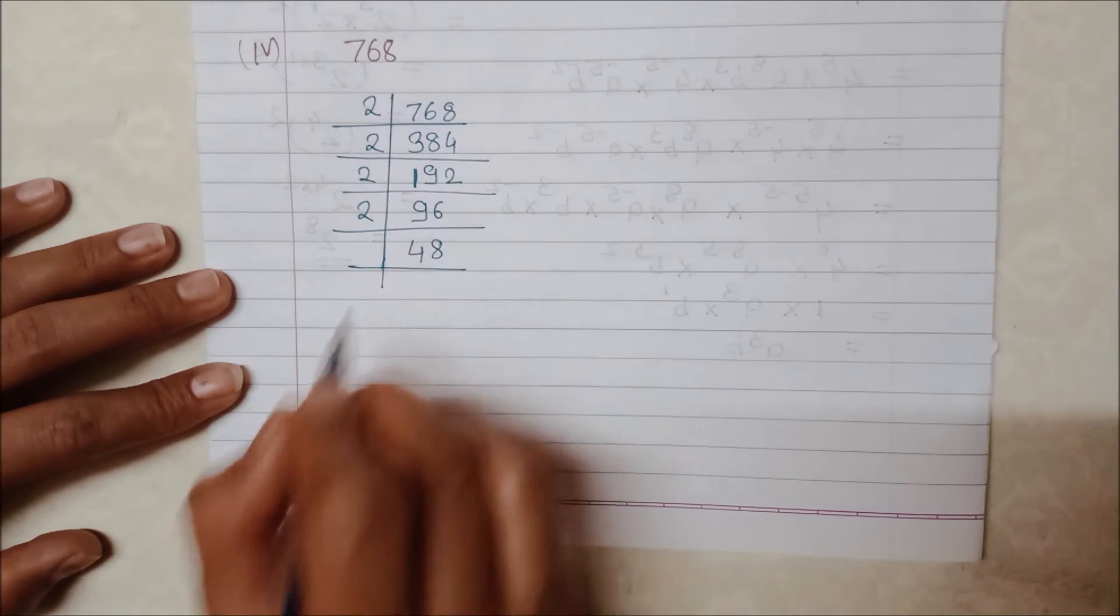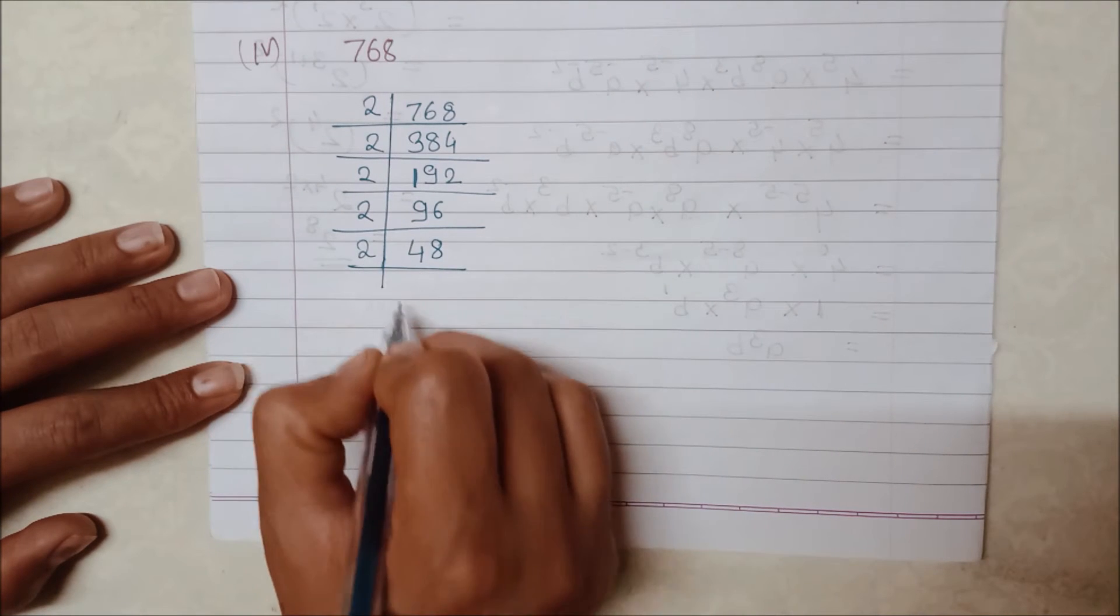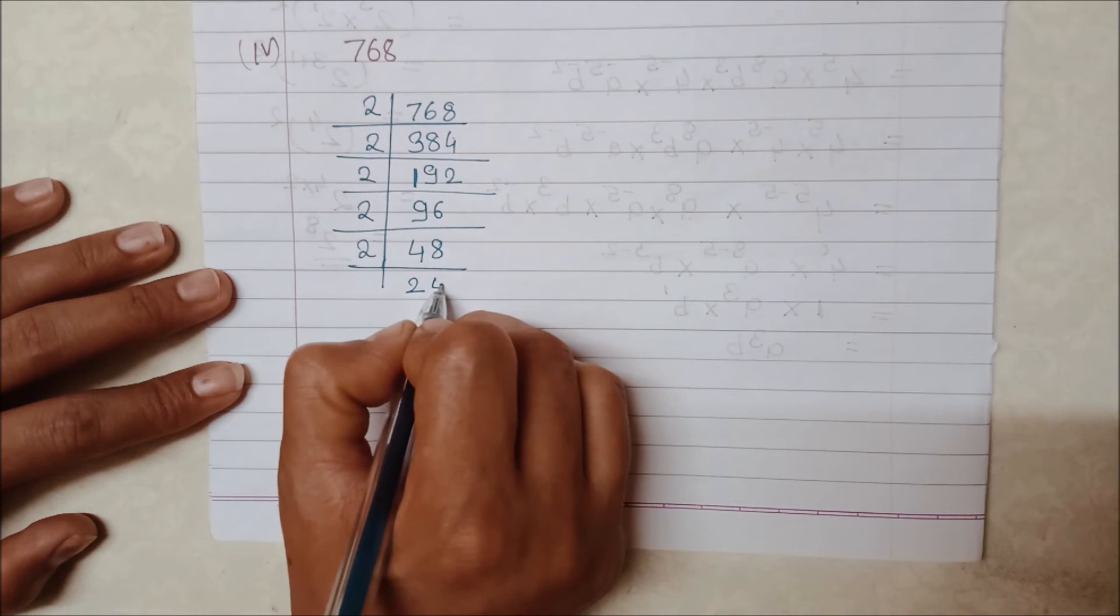We will divide 16 by 2 to get 8. Again, 48 is divided by 2 to get 24, which is 2 times 12.